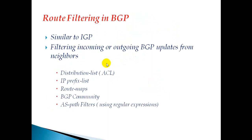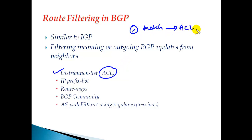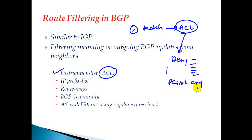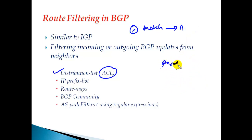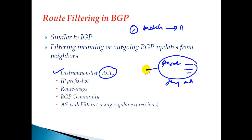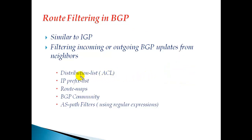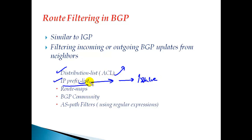There are several ways to implement route filtering. First, you can use a distribution list with an ACL — write an ACL that matches the networks you want to deny, use deny statements for those networks, and then permit any remaining traffic. When filtering is applied, only routes matching permit statements pass. Alternatively, you can use a prefix list instead of an ACL. Prefix lists are more efficient because they can match networks based on the slash (prefix length) value, which is one advantage over ACLs.